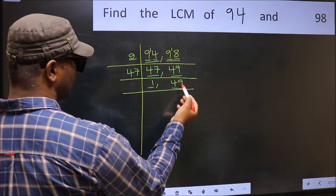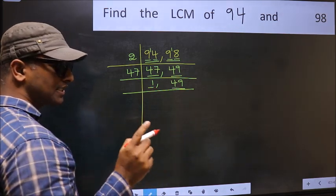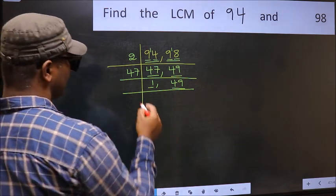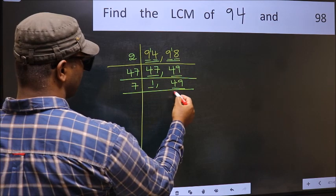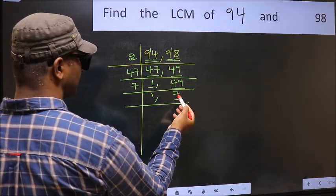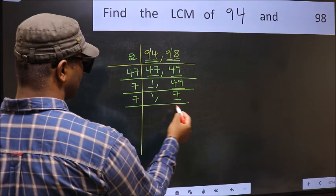So focus on the next number 49. Always remember 7 into 7, 49. That is 7 times 7 is 49. Now we have 7. 7 is the prime number. So 7, 1, 7.